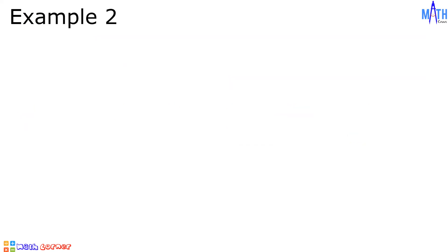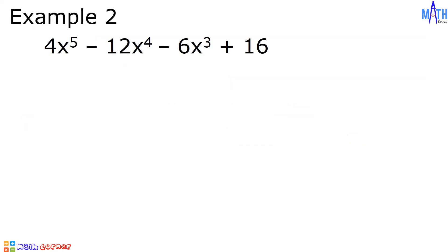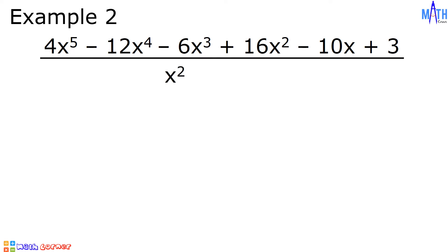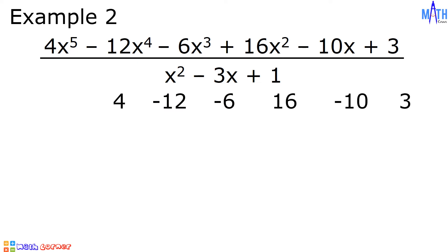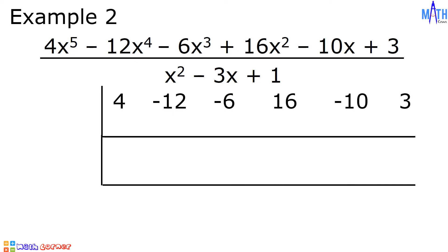Example number 2. Let us divide 4x⁵ minus 12x⁴ minus 6x³ plus 16x² minus 10x plus 3, by x² minus 3x plus 1. They are both written in standard form. Let us write the coefficients of the dividend. We have 4, negative 12, negative 6, 16, negative 10, and positive 3.